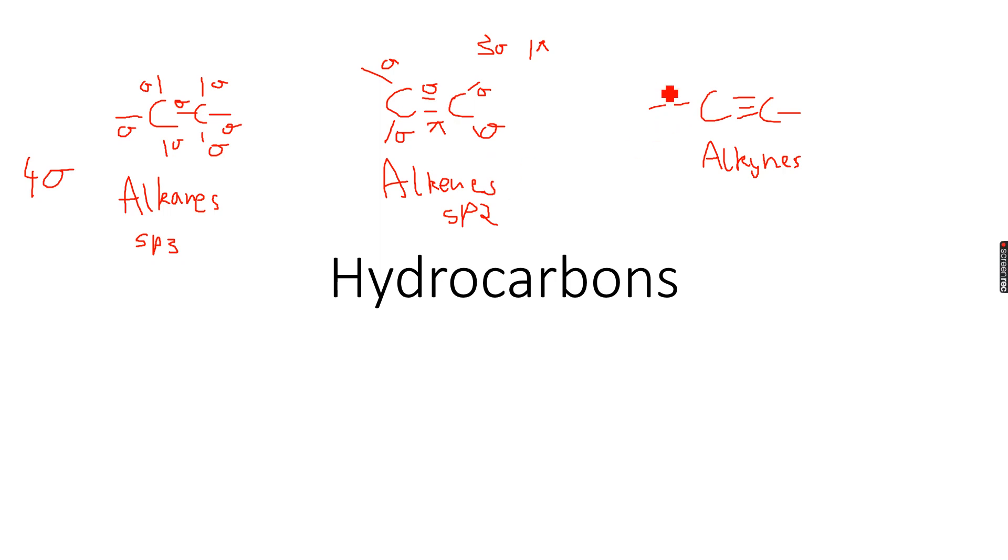Then in alkynes, we have sigma, sigma, pi, pi, and then sigma. So each carbon atom forms two sigma bonds and two pi bonds because there is a carbon-carbon triple bond. So these are sp hybridized, and you can also relate the bond angles that we did in the chemical bonding chapter.